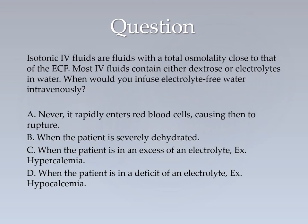Isotonic IV fluids have a total osmolality close to that of extracellular fluid. Most IV fluids contain either dextrose or electrolytes in water. Here is a question: when you infuse electrolyte-free water intravenously, what happens? A — you never infuse it; it rapidly enters red blood cells, causing them to rupture. B — you give it when the patient is severely dehydrated. C — when the patient has excess electrolytes. D — when the patient has a deficit of electrolytes.